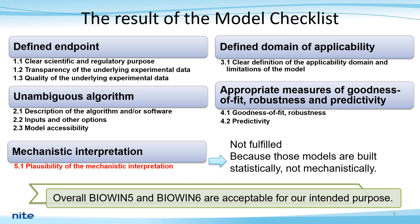Before introducing the prediction checklist, I'd like to explain the model checklist linked to BioWin 5 and 6. These are assessment elements for the model checklist. Outcomes of all items other than 5.1, highlighted in red, become fulfilled. Overall, BioWin 5 and 6 are acceptable for the intended purposes. The reason why 5.1 is considered not fulfilled is because those models are viewed statistically, not mechanistically.